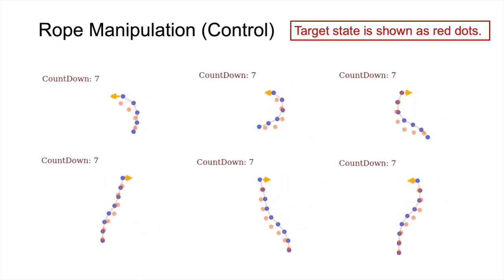Here, we demonstrate the control results. The red dots show the target shape we want the rope to be after certain timestamps. We use our model to synthesize the control signal and apply them to the ground truth physical simulator to generate the results. Note that, in all these test cases, the number of masses, the gravity, and the spring constant are different.